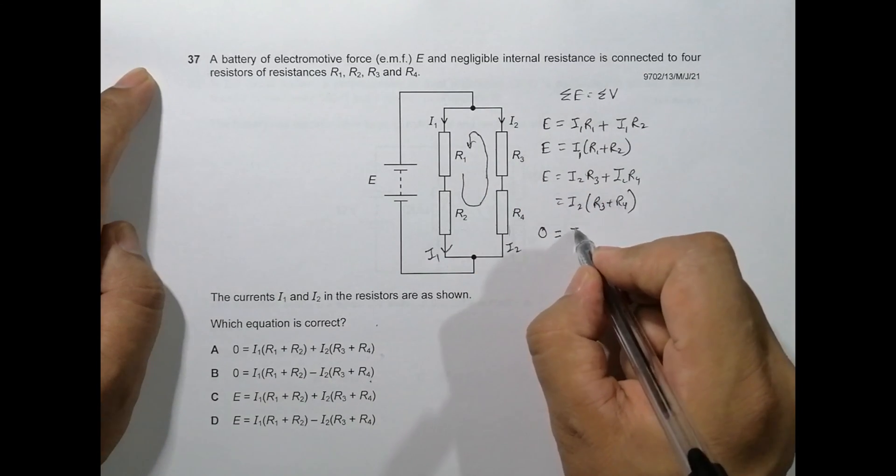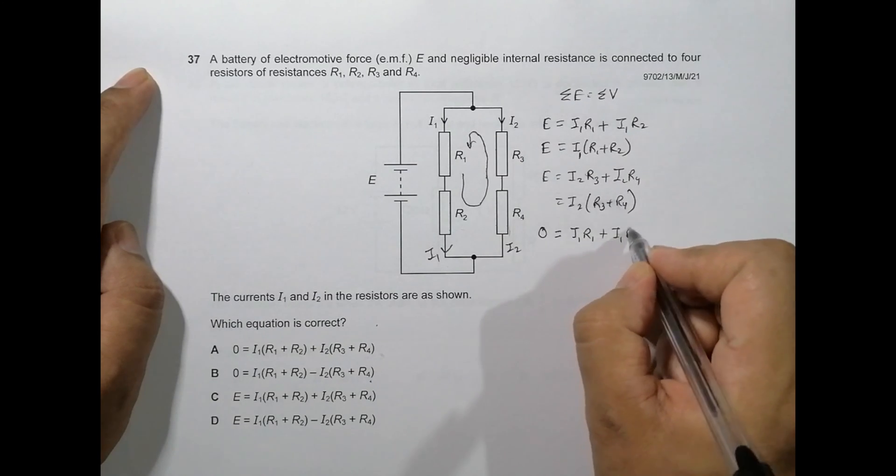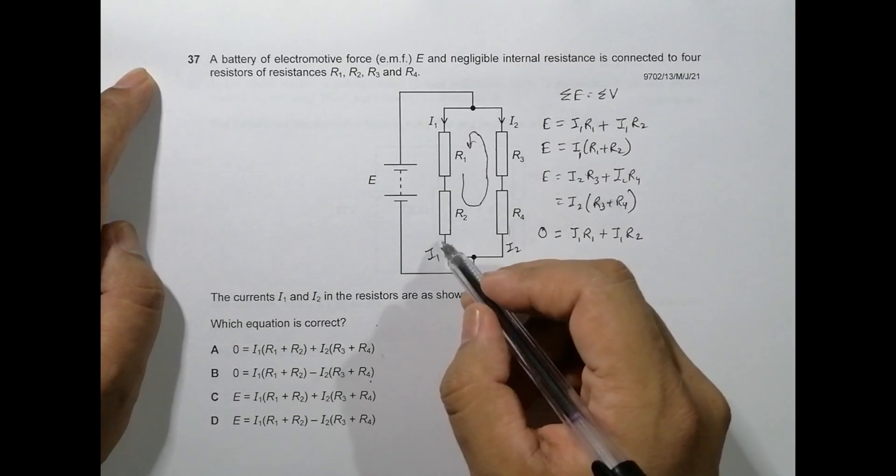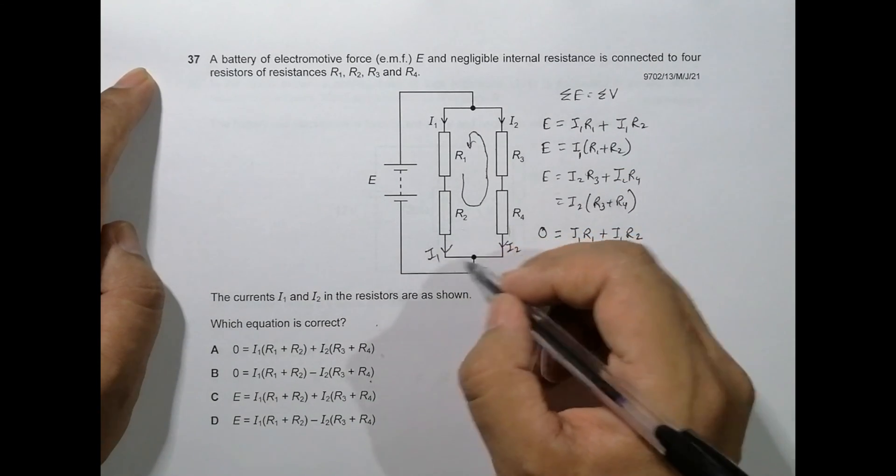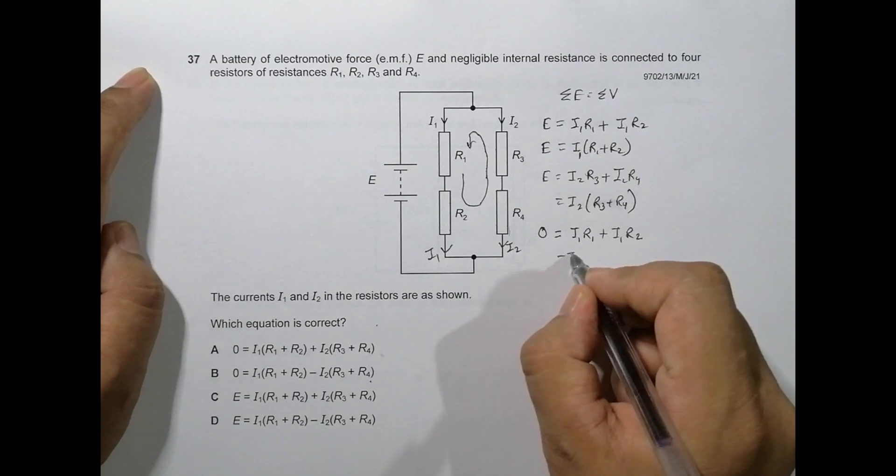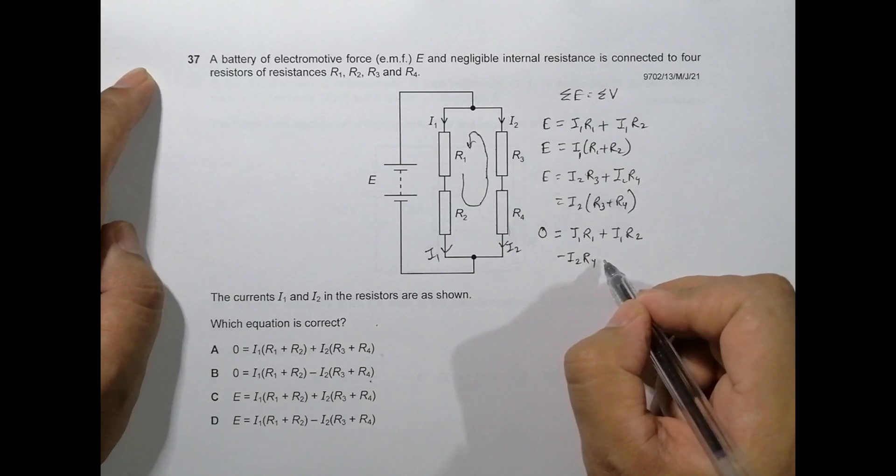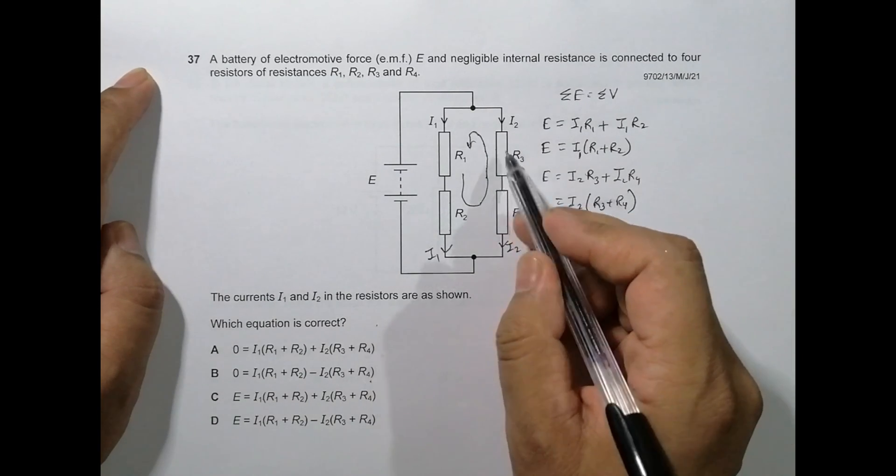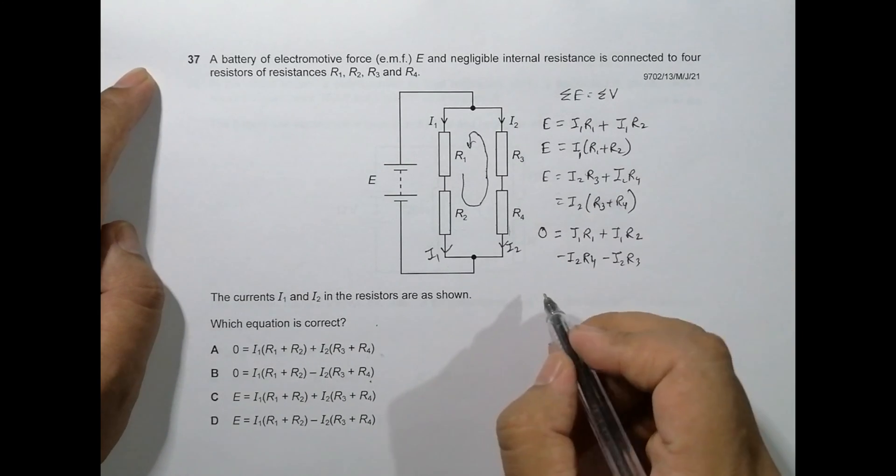I1·R1 plus I1·R2. Then I go here, so the path of current is like this. When I go against it, it should be negative. So it will be equal to minus I2·R4, again minus I2·R3.